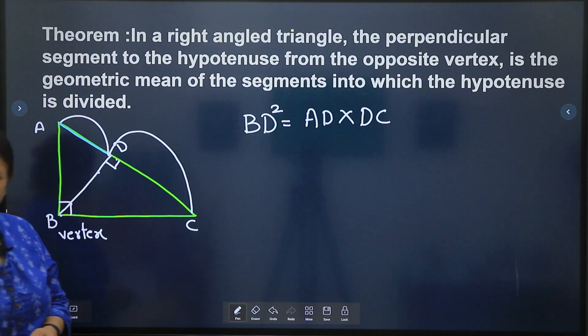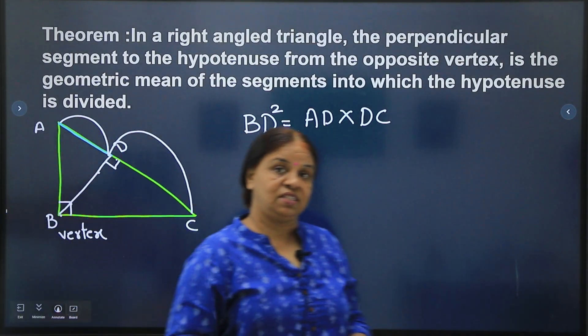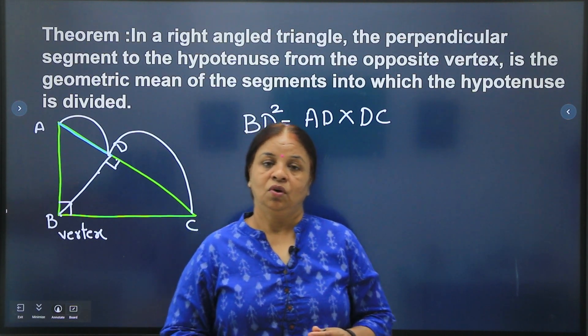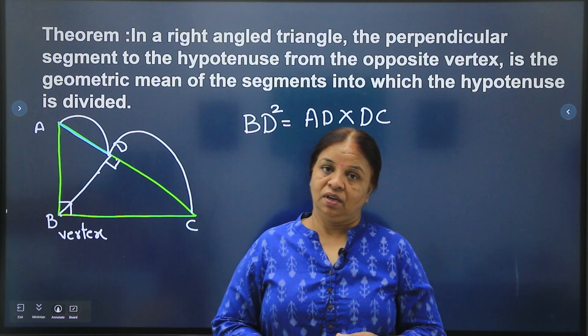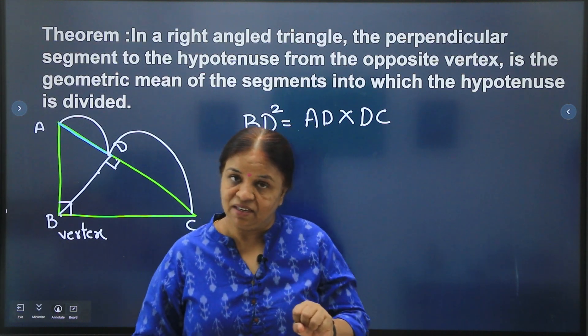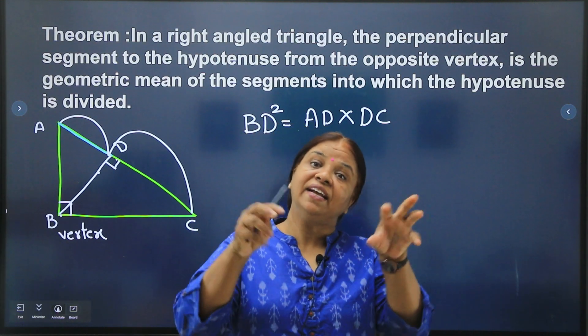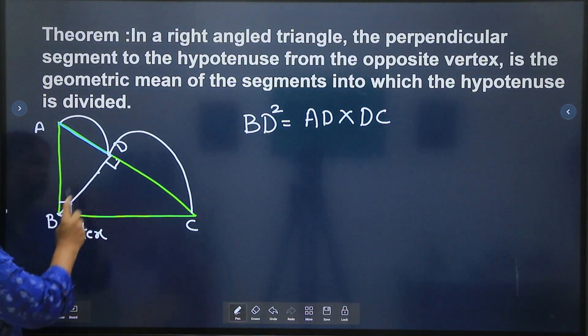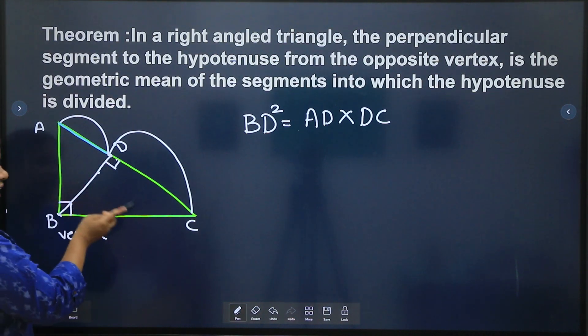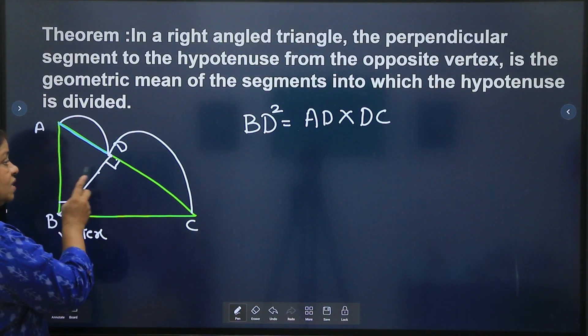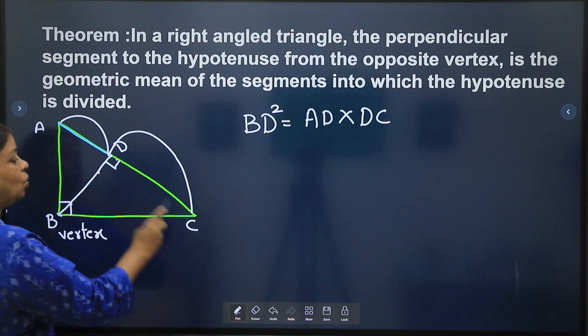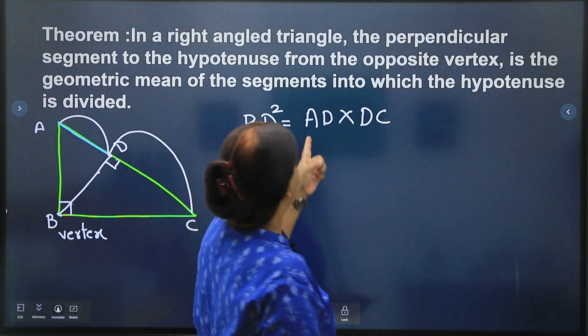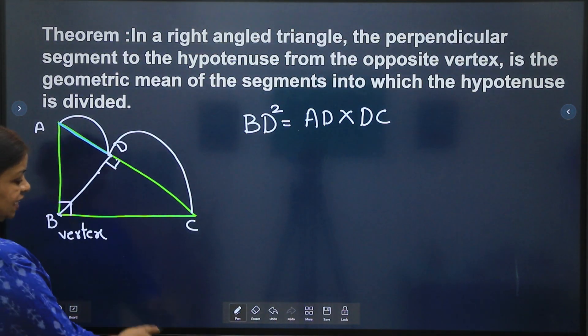and DC. So geometric mean means BD square is equal to AD into DC. This is very easy to prove children. Now before this, in video 1 you have learned theorem of right angle triangle and similarity in right angle triangle. When you drew a perpendicular line from the vertex to the hypotenuse, the triangles thus formed were similar to one another and also similar to the original triangle. We have done this in video number 1. Now that concept we will be using here.